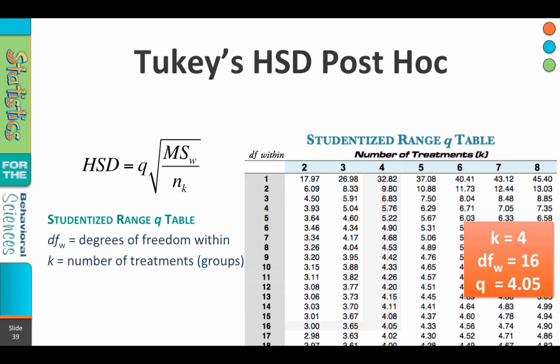So in our example, we had four treatments, so K equals 4. Our degrees of freedom within was 16. We're going to go to the column where the number of treatments equals 4, go down to the row with 16, and find at the intersection of those two values: 4.05.